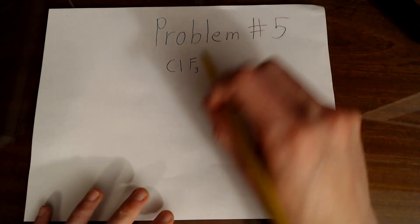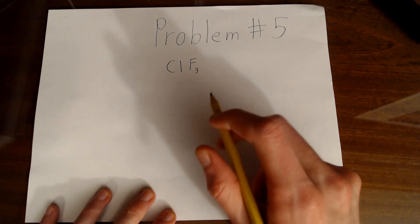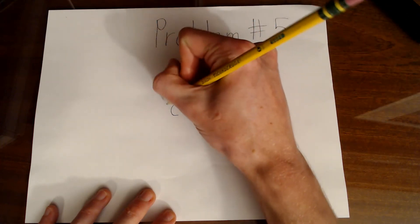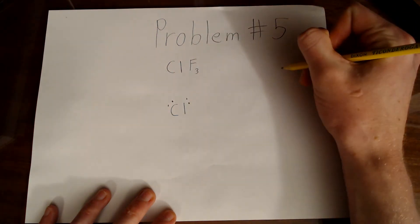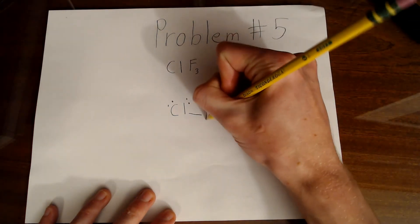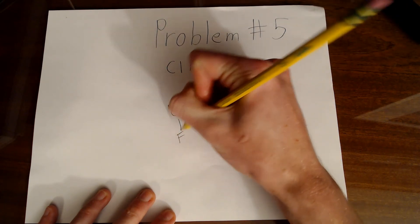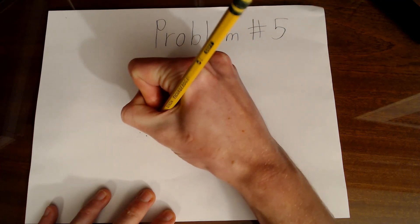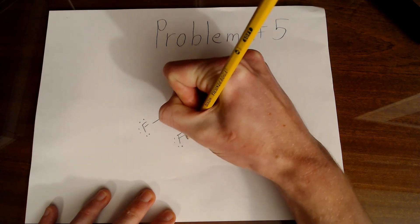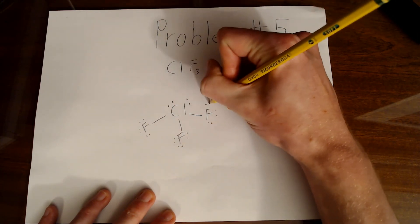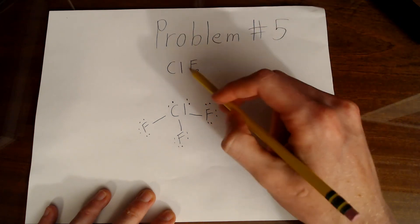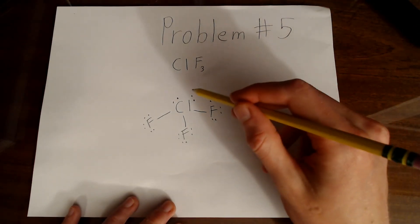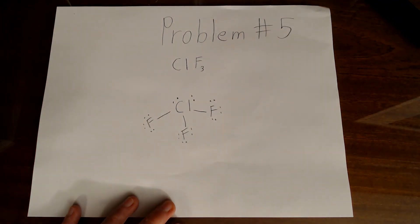Finally, for our last problem, we have the molecule ClF3 with a Lewis structure that looks like this. It has the central chlorine atom, which has 1, 2 lone pairs surrounding it, and then it also has 1, 2, 3 fluorine atoms bonding to it with the electrons surrounding them. And this will be our Lewis structure for ClF3. Now, we'll use our VSEPR theory structure table to determine the VSEPR shape of this molecule based on its Lewis structure.